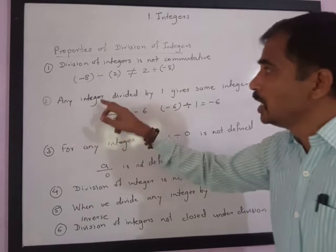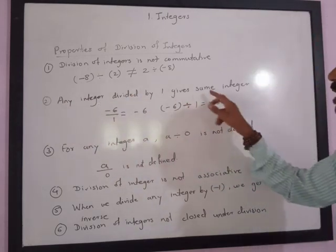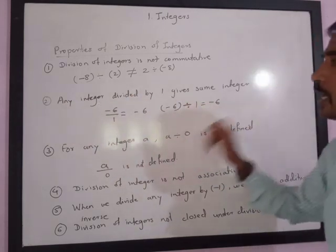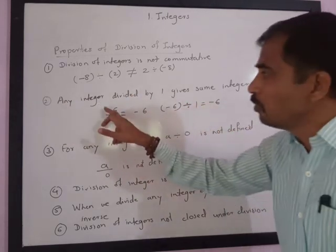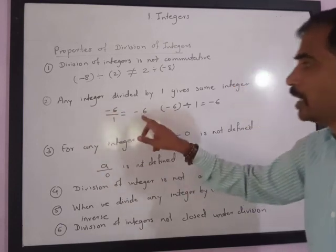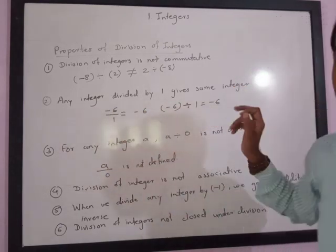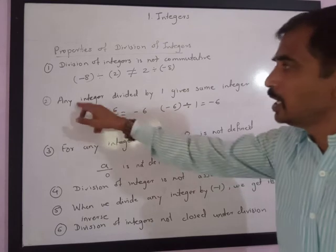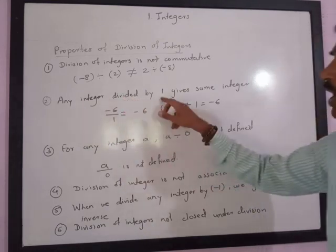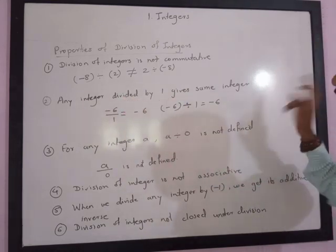The second property is that any integer divided by 1 gives the same integer. For example, negative 6 divided by 1 gives negative 6, and 7 divided by 1 gives 7.